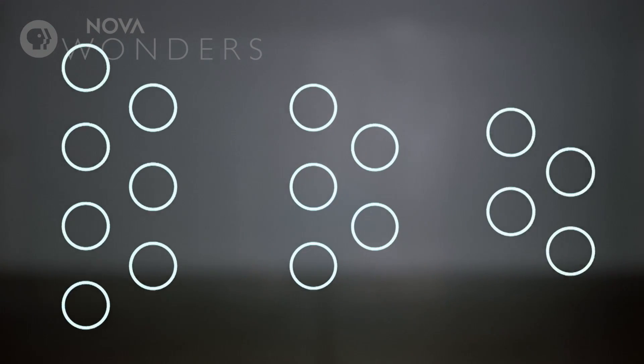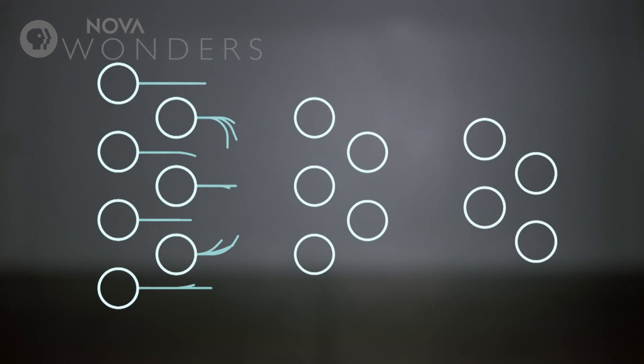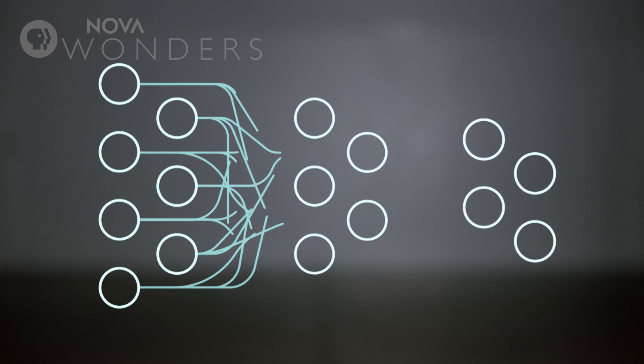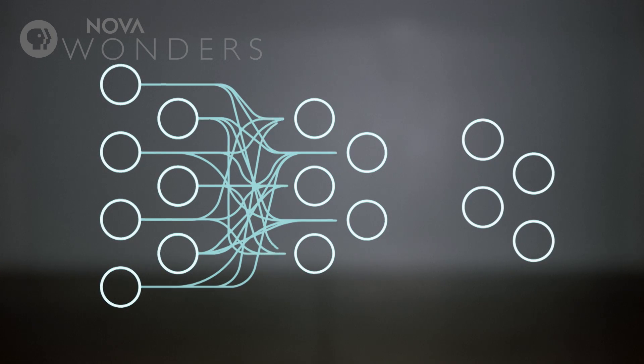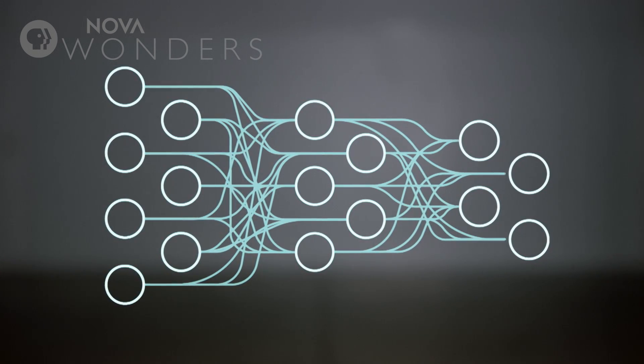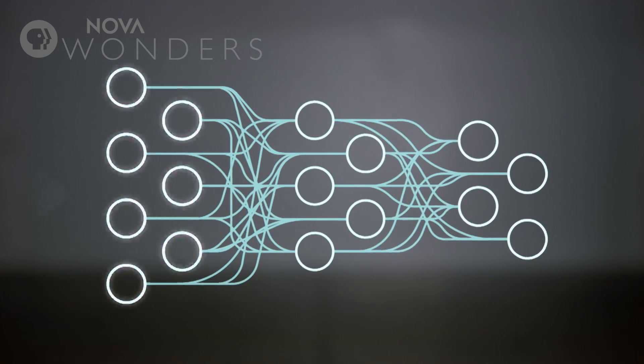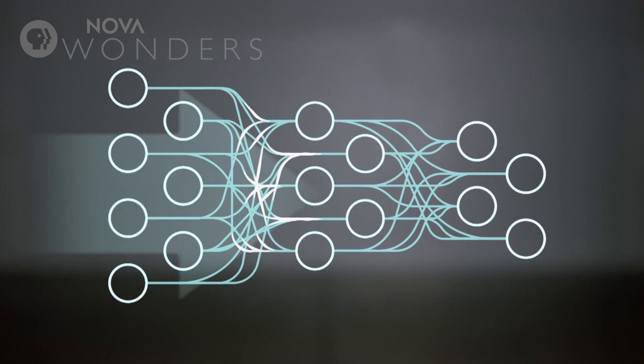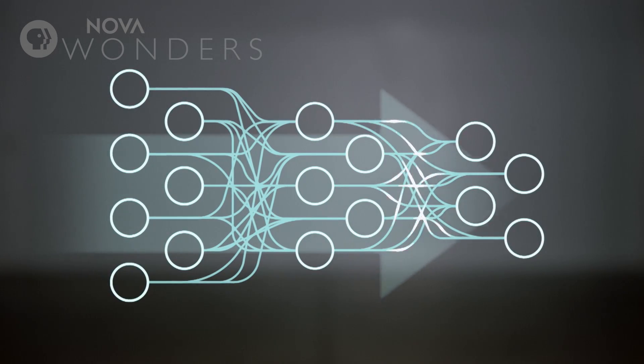Here's where deep learning comes in. As you might recall, it's a program based on the way your brain works, and it looks something like this. Here we have layers of sensors or nodes. Each feeds information in one direction, from input to output.